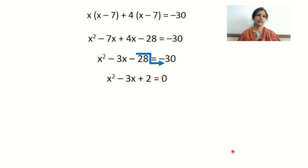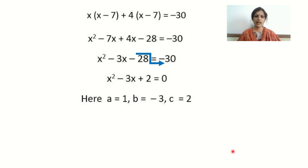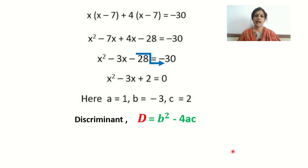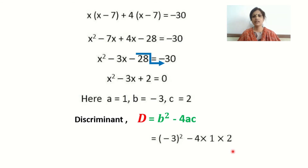We can now solve by the formula method. Comparing with standard form, we get a equals 1, b equals minus 3, and c equals 2. The discriminant d equals b squared minus 4ac. Substituting: minus 3 the whole square minus 4 into 1 into 2 gives 9 minus 8, which equals 1. So the value of d is 1.